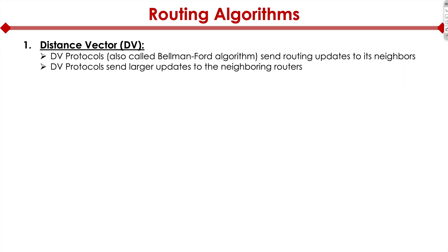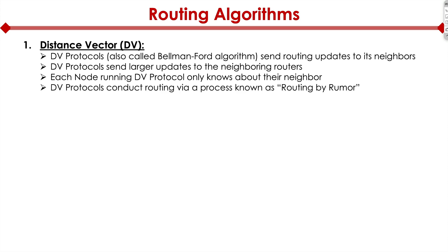Distance vector protocols send large updates to the neighboring routers. Each node running a distance vector protocol only knows about its neighbor. Distance vector protocols conduct routing by a process called routing by rumor. So what that means is if the neighbor is advertising false information, we'll accept it — because that's what routing by rumor means. We don't know any better. Because our neighbor is saying it's truth, we'll assume it's true and advertise that information to the rest of the environment.